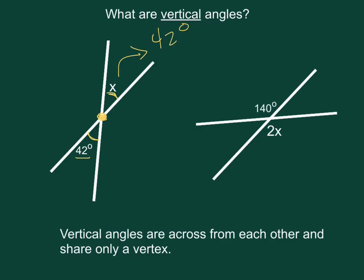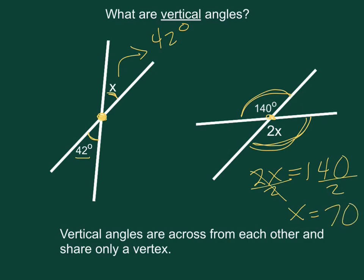Now they might ask you, or they might give you one of the vertical angles. Remember, they're across from each other where two lines meet and they only share this vertex. So if this angle is 140 degrees and this is 2 times x, all you have to do is put them equal to each other. 2x equals 140, divide by 2 on both sides, and we know the value of x is 70.